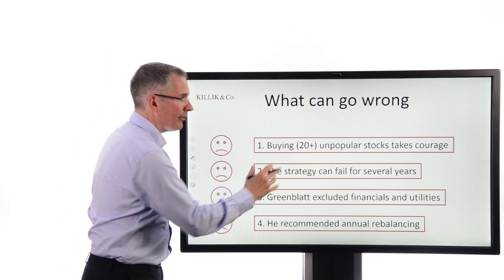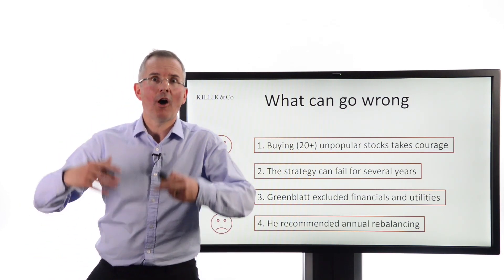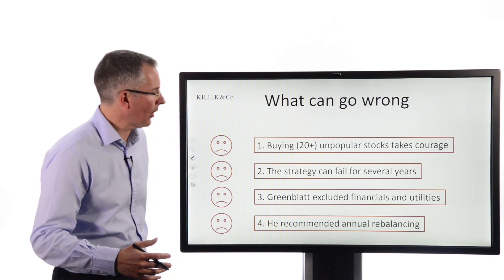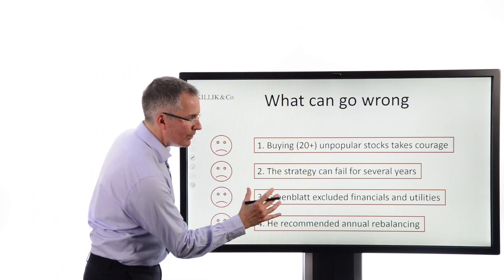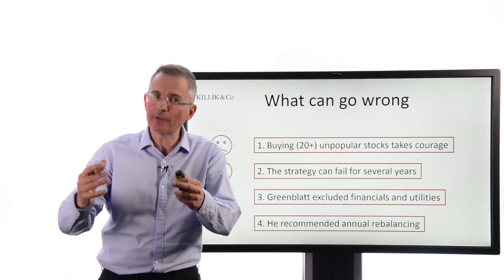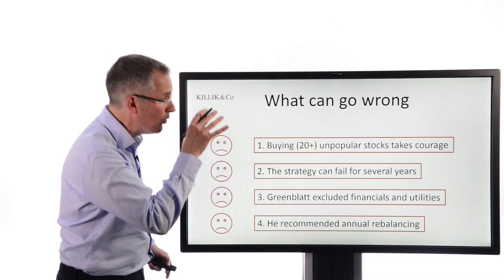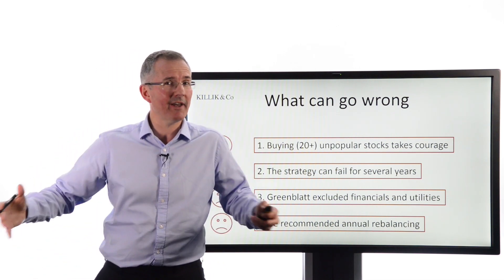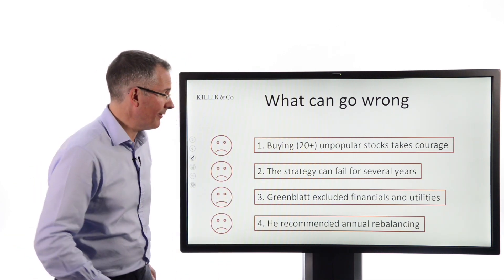The strategy can fail for several consecutive years. So you've got to be able to hang on in there, not panic sell, not dump stocks. Greenblatt excluded deliberately financials and utilities. So for income investors, this isn't looking too clever necessarily, because they might be two sectors that you would rely on, potentially, for dividend yields. So certain investors will look at this a little bit nervously.